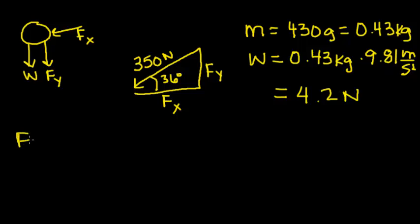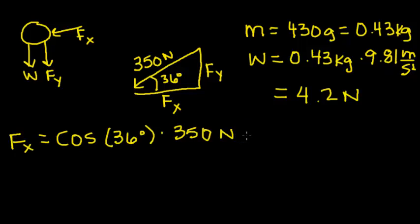We're going to solve for the force in the x direction, the horizontal component of the 350 newton force. We're going to do this by multiplying the cosine of 36 degrees by the 350 newton force. This is going to equal 283.2 newtons.